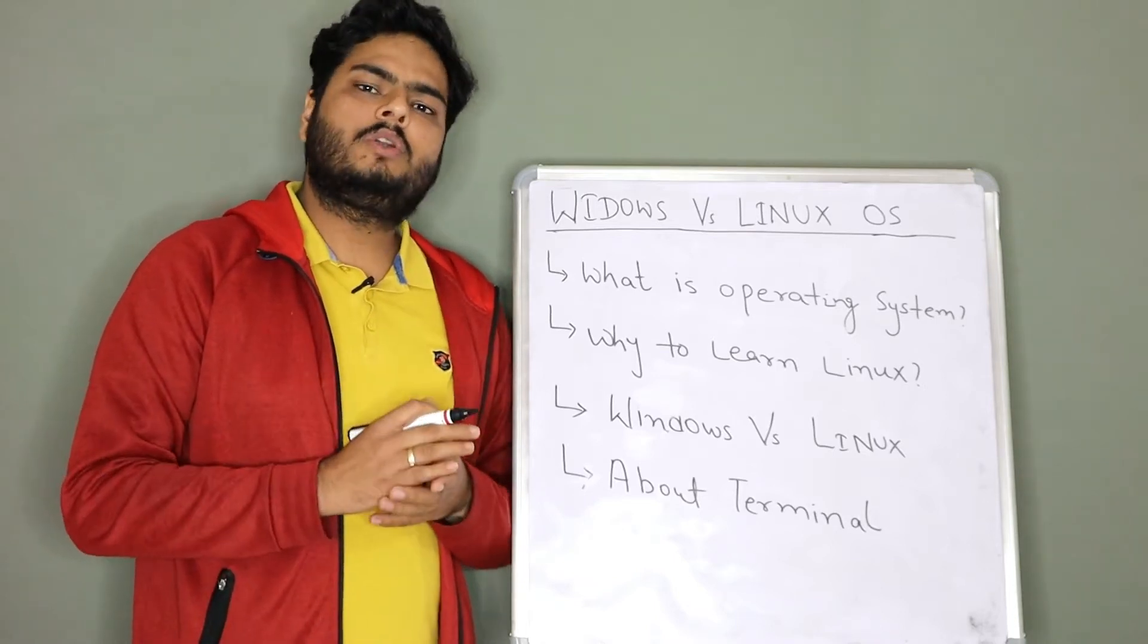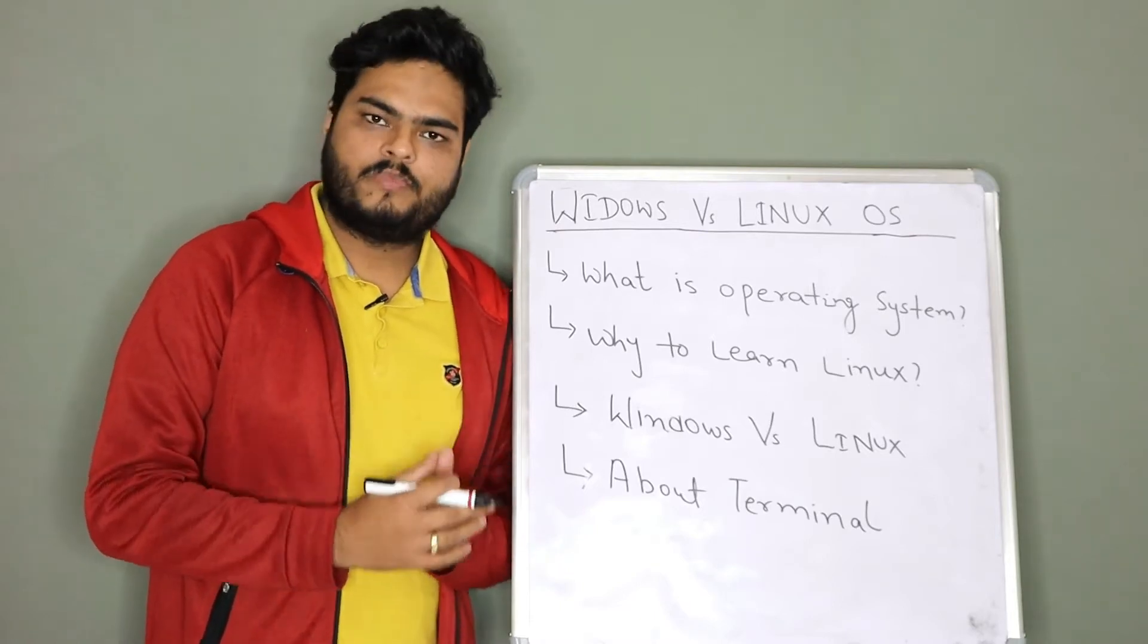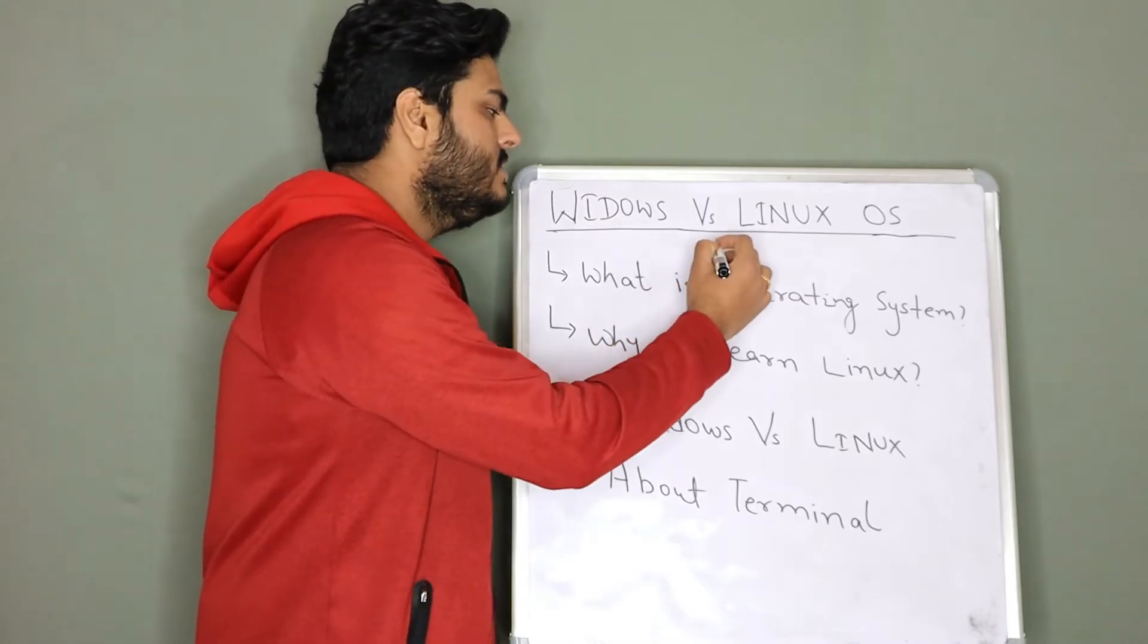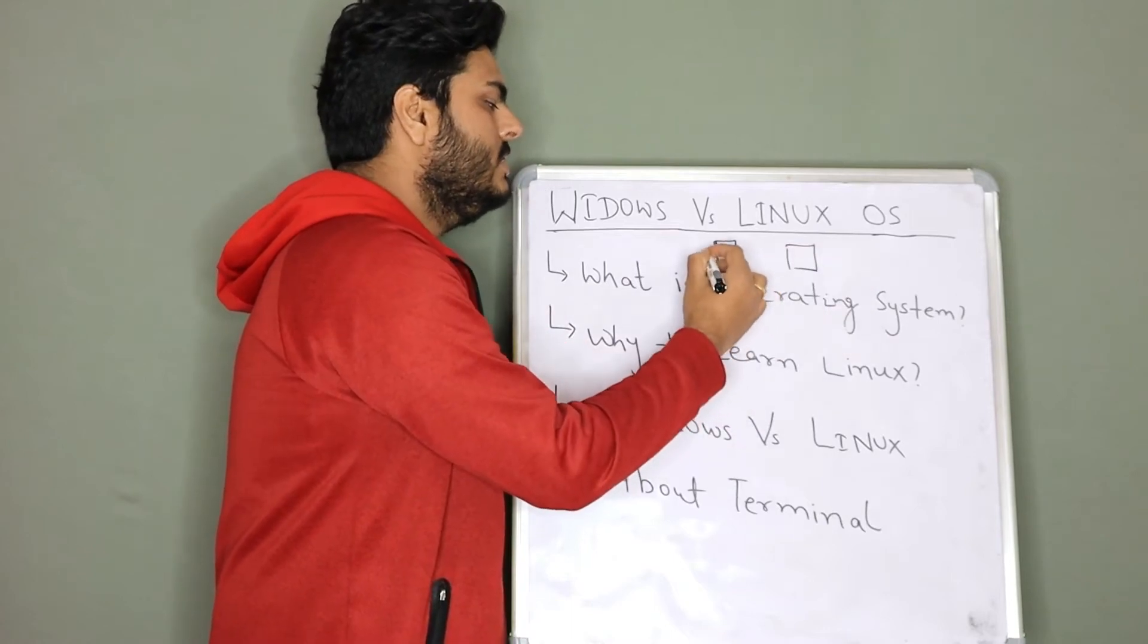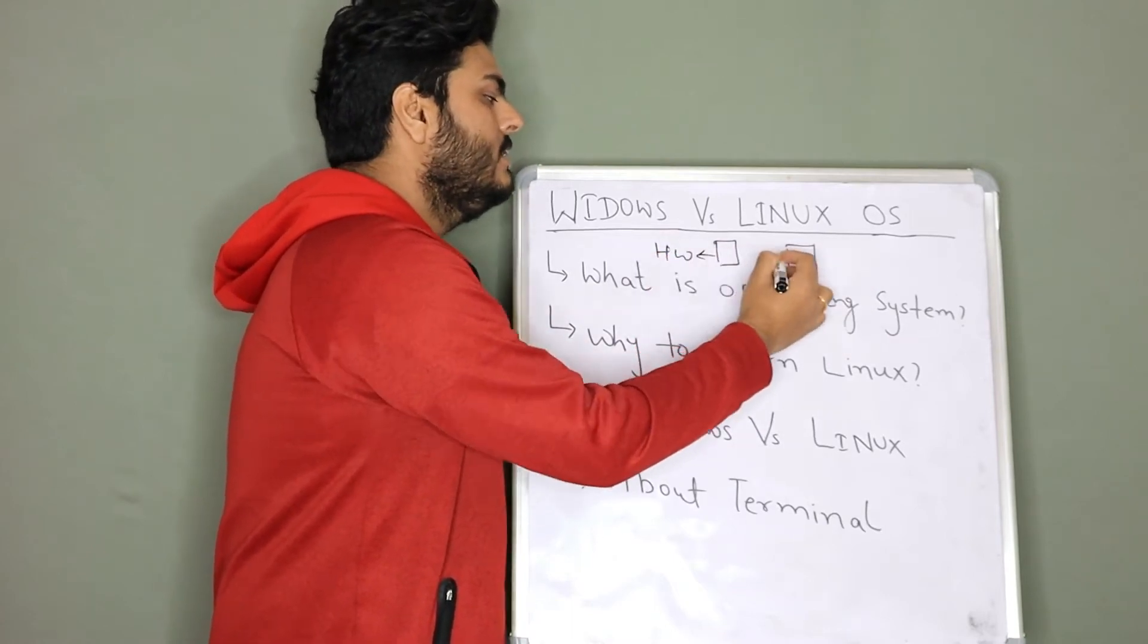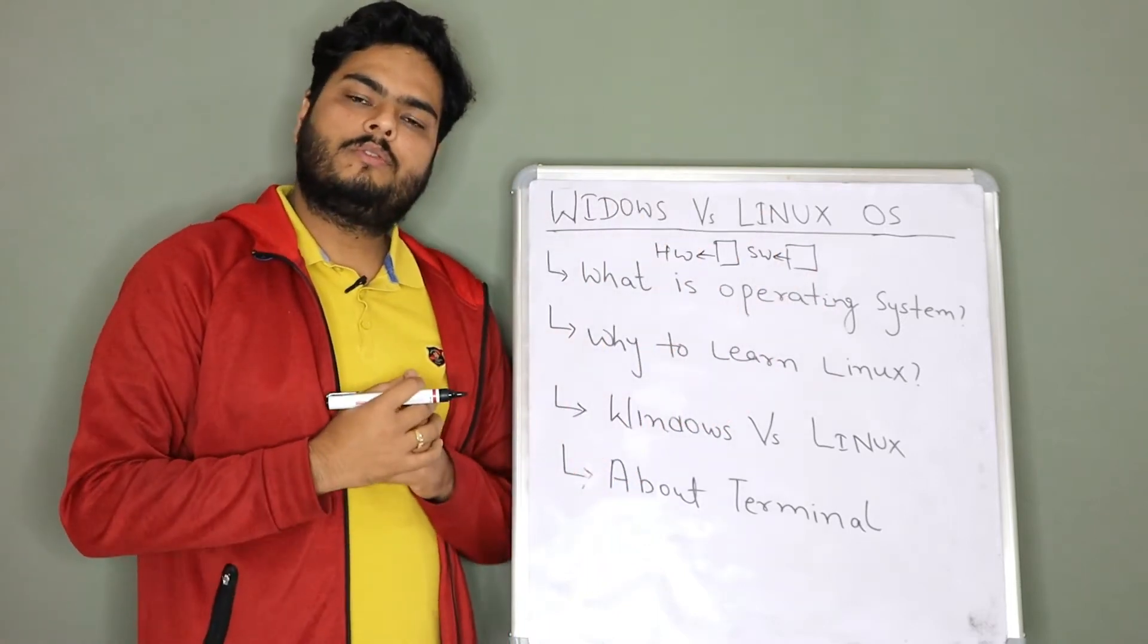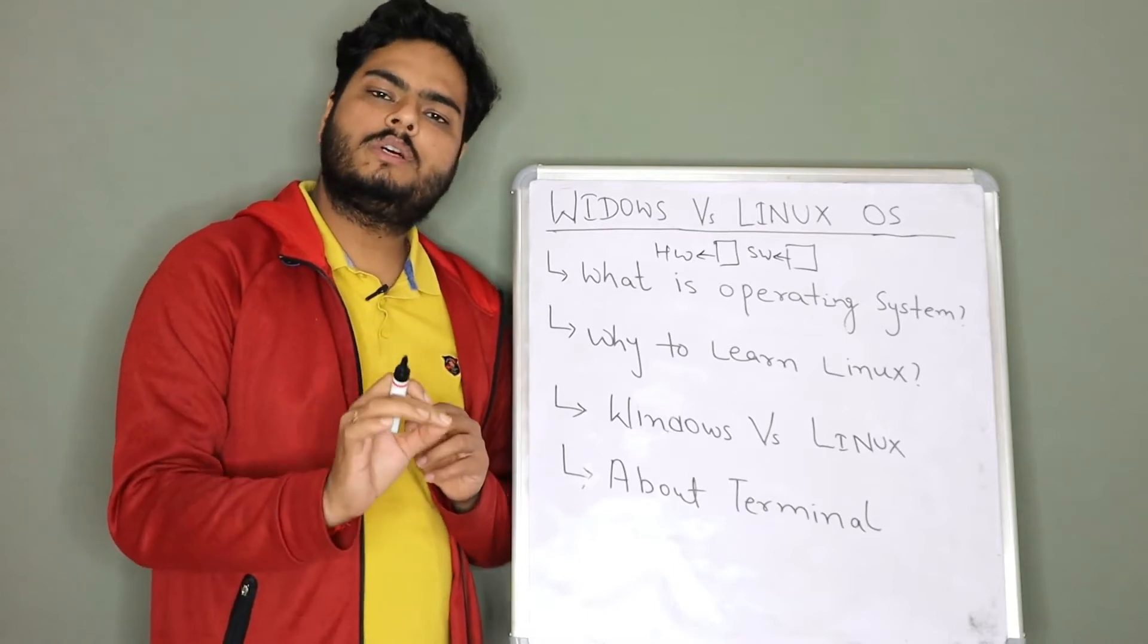So, assuming some of you are not from CS background, what is an operating system. Let me give you a brief introduction to OS. So in your computer, there are just two things. One is hardware and other is software. So let us call this hardware and let us call this software. What is hardware and what is software?